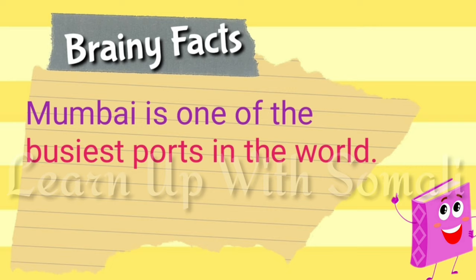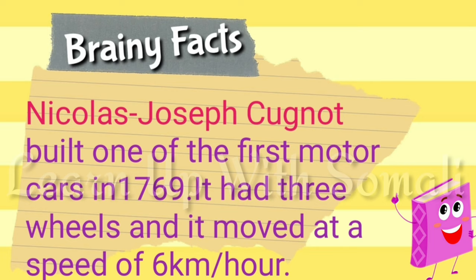Nicholas Joseph Cugnot built one of the first motor cars in 1769. It had three wheels and moved at a speed of 6 km per hour.